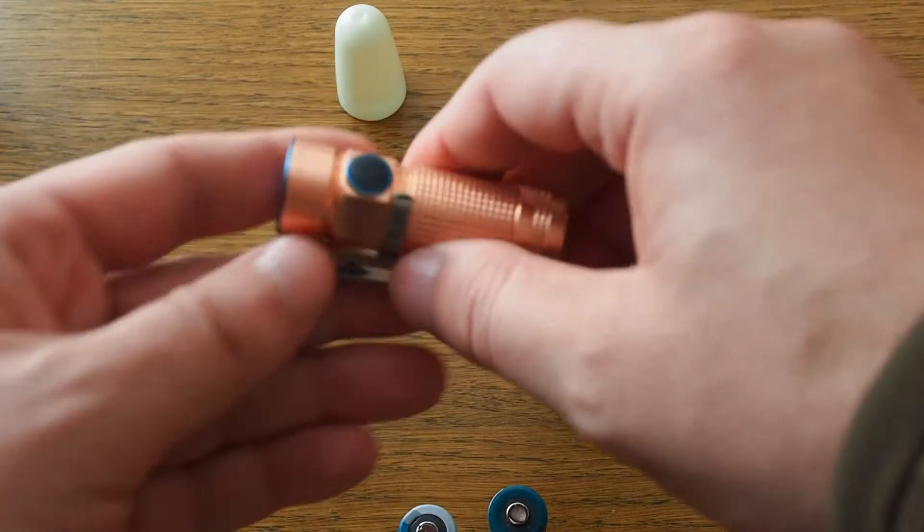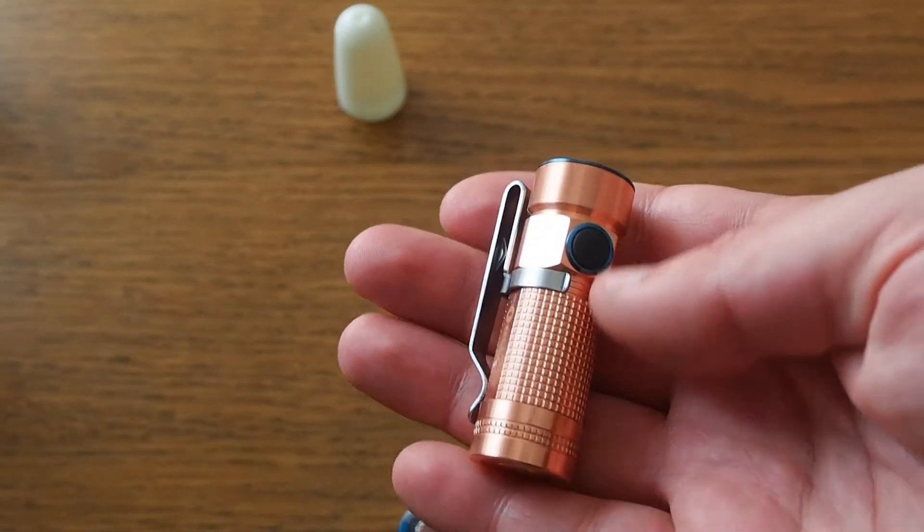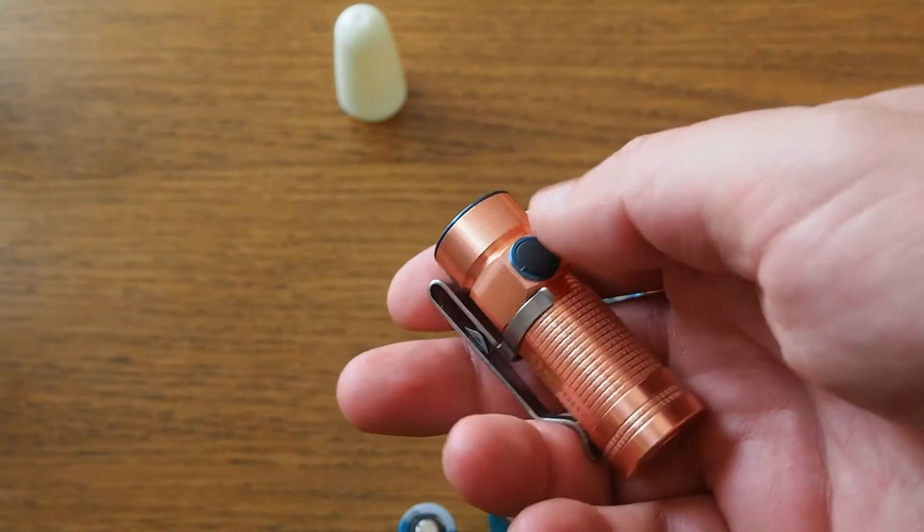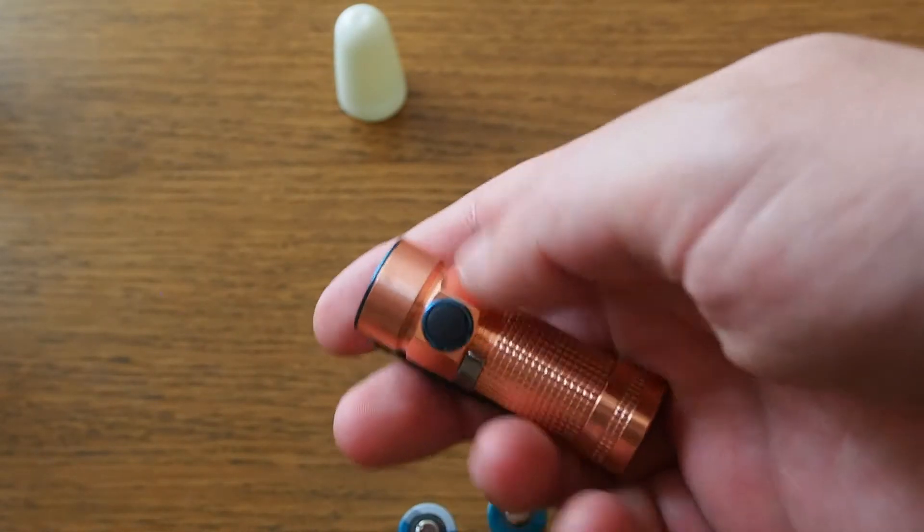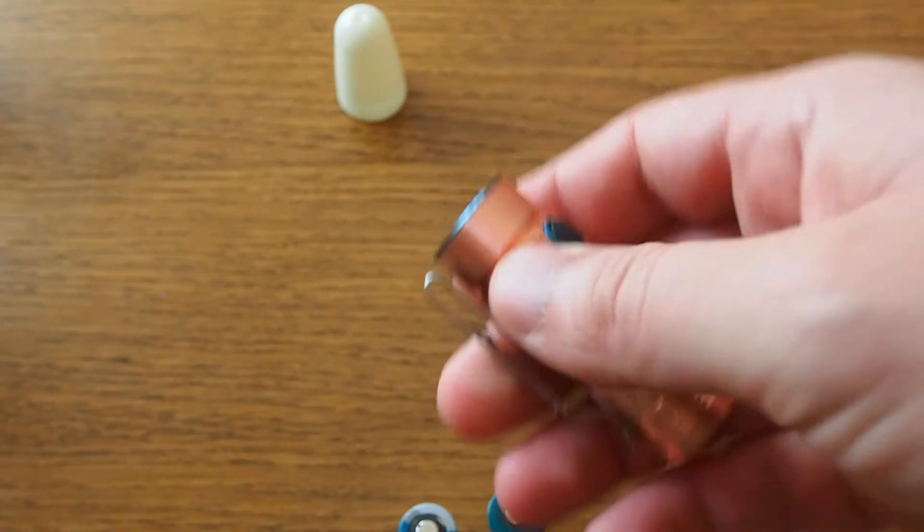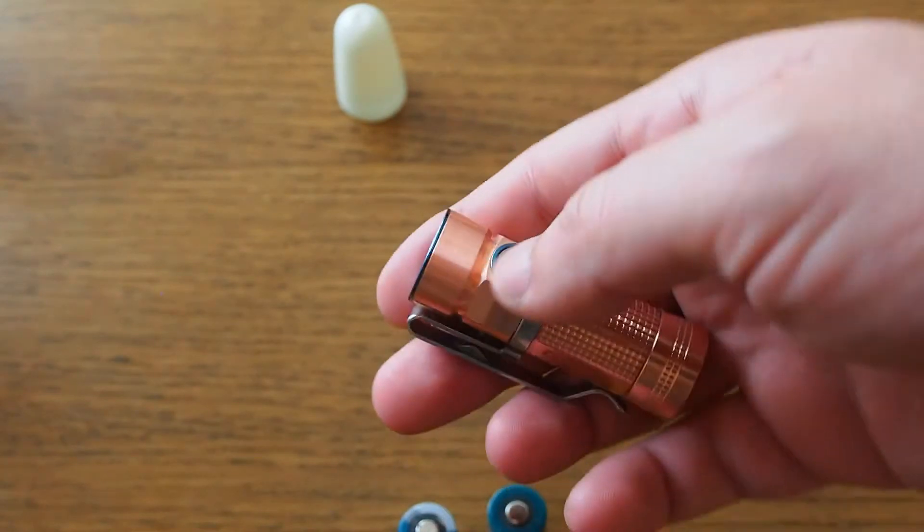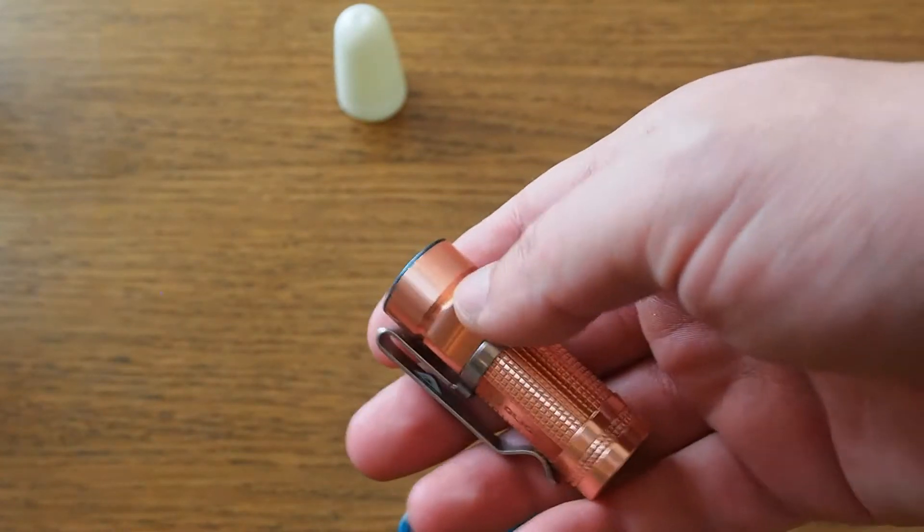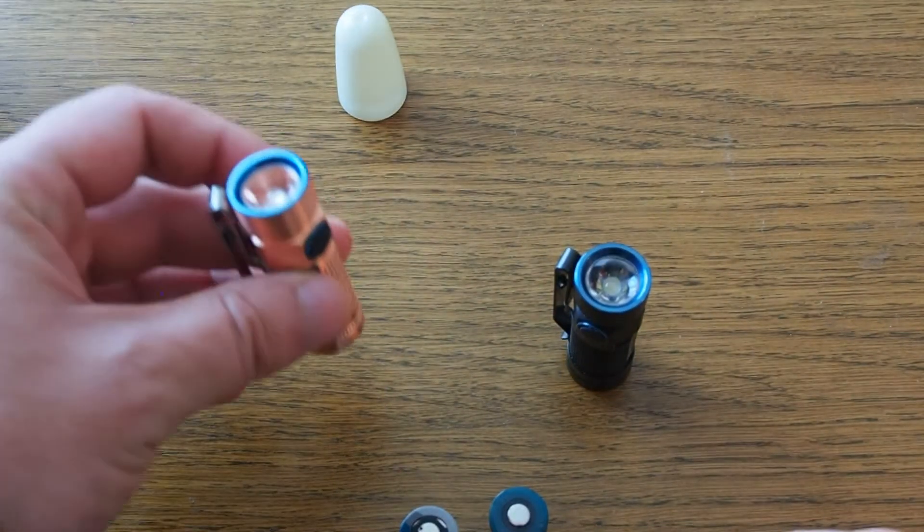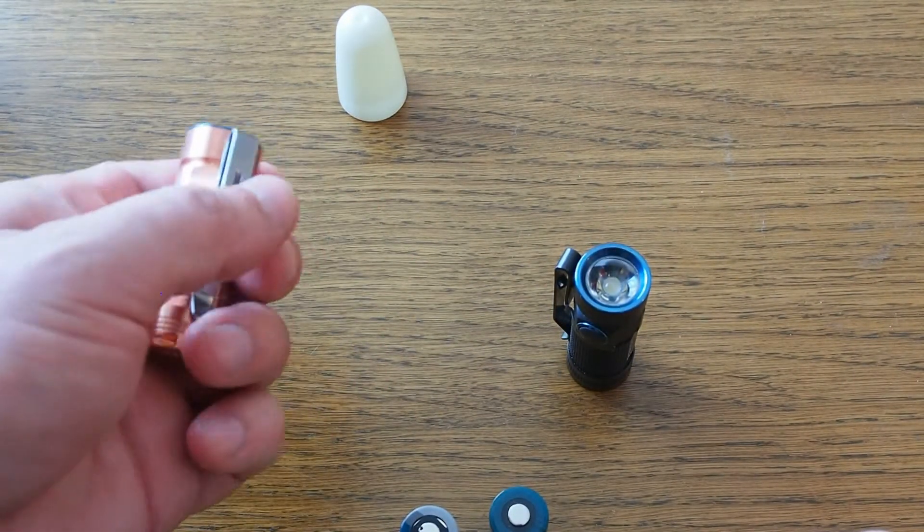One complaint that I read about is that it doesn't have a low voltage indicator. Well, it doesn't have one directly, but indirectly you can see, because when it runs low, you cannot access the higher outputs. So if this is a problem for you, just want to mention it.